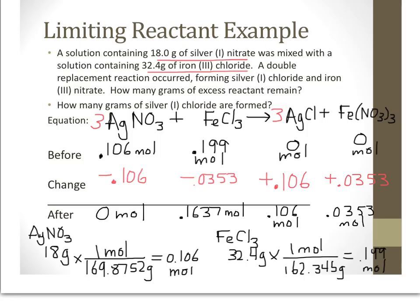Looking back at the problem, it asks two things: how many grams of excess reactant remain, and how many grams of silver(I) chloride are formed. Our excess reactant is iron chloride, so we'll need to convert 0.1637 moles of FeCl₃ to grams. We'll also need to convert 0.106 moles of AgCl to grams. We'll flip to the next slide to do those two mole-to-gram conversions.